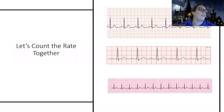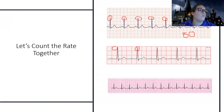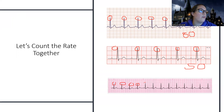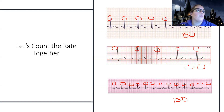Let's get some practice counting rate together. First one: one, two, three, four, five, six, seven, eight — rate of 80. Next one: one, two, three, four, five — rate of 50. Bottom one: one, two, three, four, five, six, seven, eight, nine, ten, eleven, twelve, thirteen — 13 times 10 is 130. So we've got a normal rate, a bradycardia, and a tachycardia. We're just practicing this step by step, not interpreting all these rhythms yet.